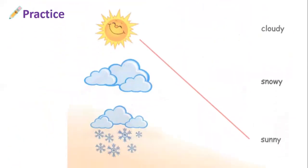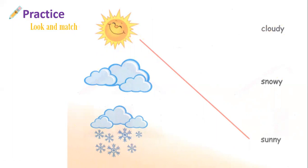Next one — look and match. Bài tập này chúng ta sẽ quan sát các bức tranh và các từ. Các bức tranh sẽ ở bên tay trái, còn các từ sẽ ở bên tay phải. Sẽ nối các bức tranh với các từ tương thích. Ok, you will have 15 seconds to see.